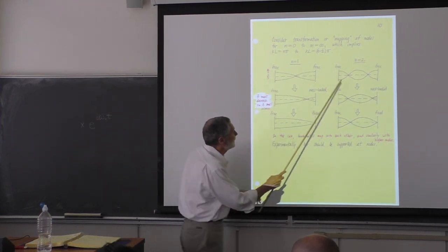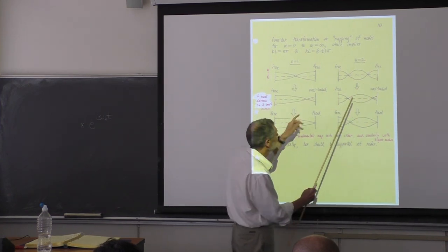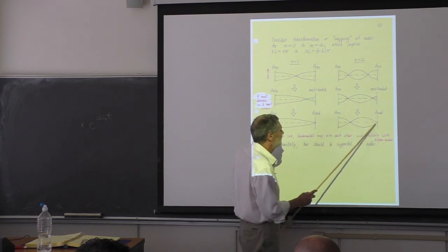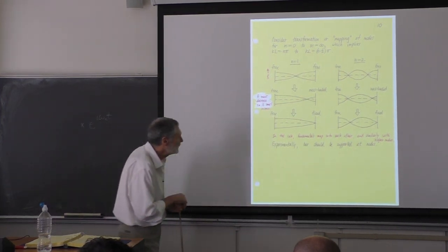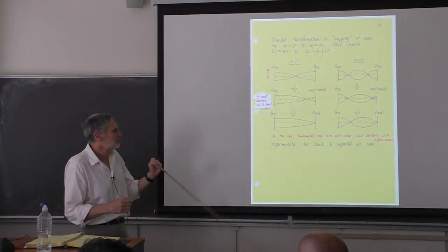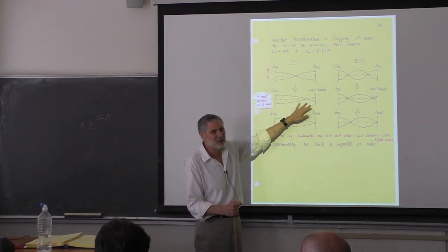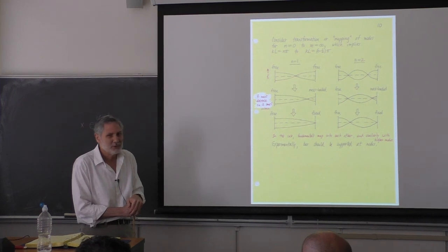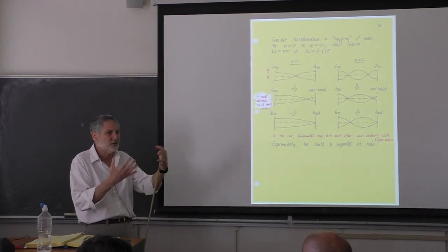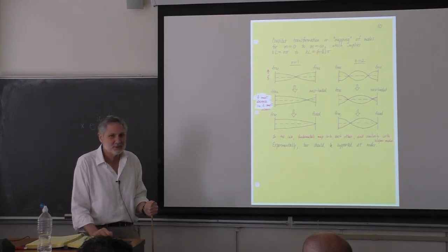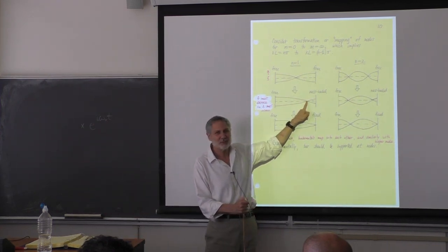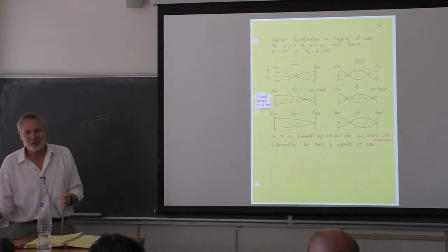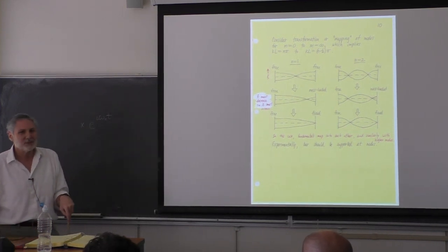The next mode up: as I add mass, the wavelength increases and the nodes migrate. Eventually that node reaches the end when the mass is very large. In underwater sound, people use resonant bars a lot. Where do you support the bar? At the displacement node — if you support it anywhere else, you'll highly damp that mode.